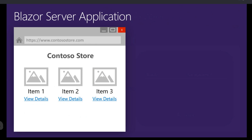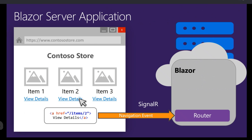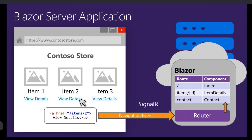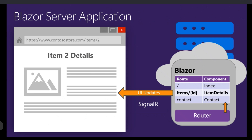In Blazor Server apps, when you click links, the navigation event is transmitted over SignalR back to Blazor's router running on the server. From that point, everything continues as before: the router looks in the routing table, finds a route match, loads the component, calculates UI updates, and transmits them back over the SignalR connection to update the browser.